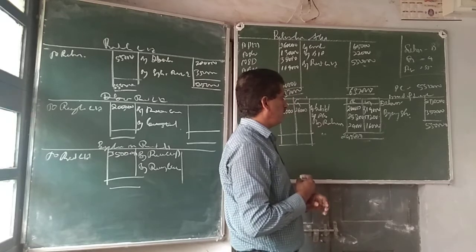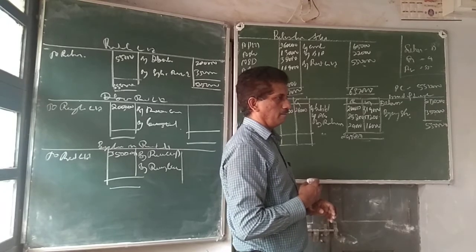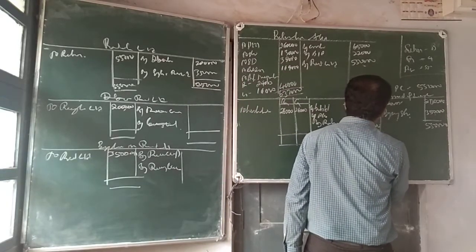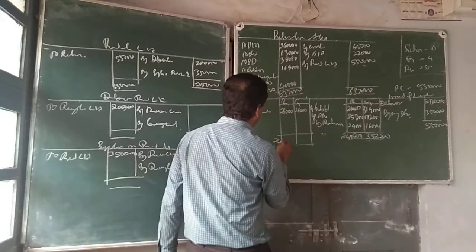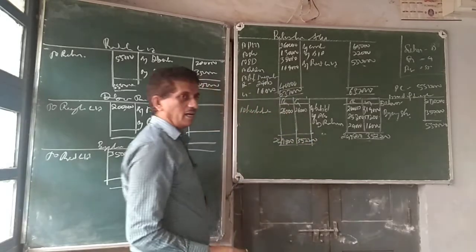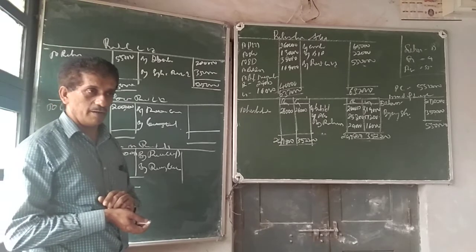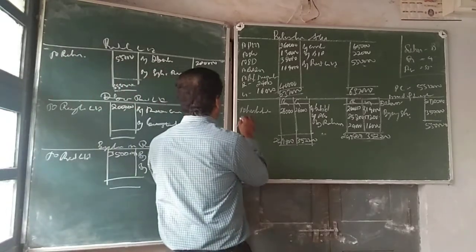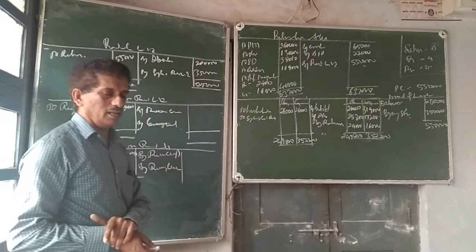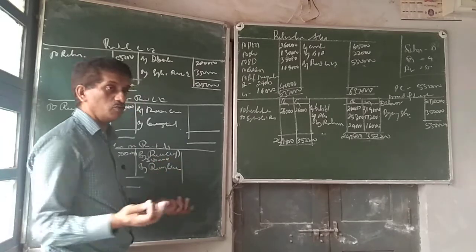3,19,000 plus 27,200 plus 16,000 equals 3,52,200. Then 2,49,800. Total: 3,52,000.